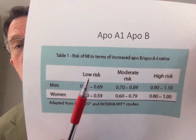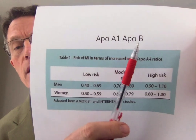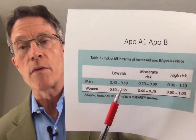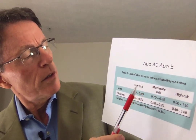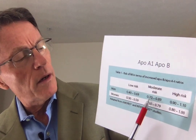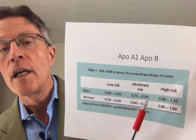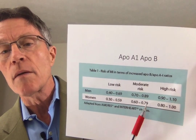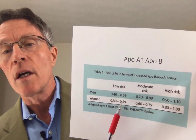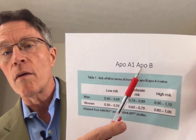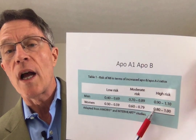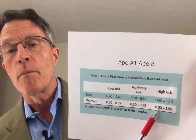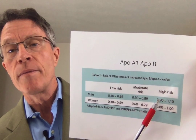ApoA1 is found in HDL particles; ApoB is found in LDL particles. Since ApoA1 is healthy and ApoB is unhealthy, you can look at their ratio as a cardiovascular risk marker — and research confirms this. The ApoB-to-ApoA1 ratio is something we look for. For men, moderate risk cut points are 0.7 and 0.89. For women, they're 0.6 and 0.79. Individuals with a lower ApoB and higher ApoA1 are at lower risk. Females at 0.8 or above or males at 0.9 or above have higher risk. Thank you very much.